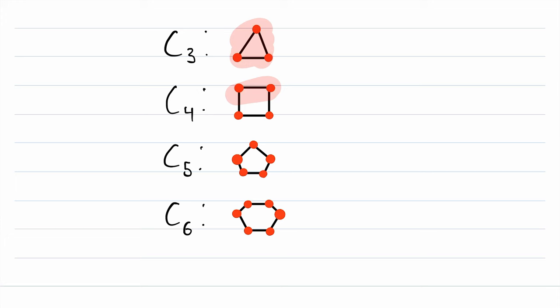Another neat thing to note about cycle graphs is that they can be drawn as regular polygons. That's why the graph C3 will sometimes be called a triangle, and the graph C4 will sometimes be called a square. The graph C5 sometimes called a pentagon, C6 a hexagon, and so on.